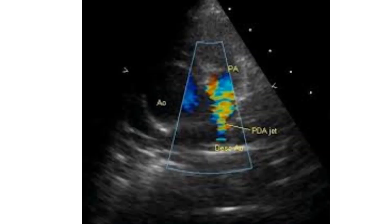Colour flow imaging shows a high velocity jet in the pulmonary artery arising distally from the descending aorta, suggesting a patent ductus arteriosus. This is one of the compensatory mechanisms to improve pulmonary flow in Tetralogy of Fallot. Another mechanism is major aortopulmonary collateral arteries (MAPCA). Intrapulmonary collaterals can also occur in Tetralogy of Fallot.